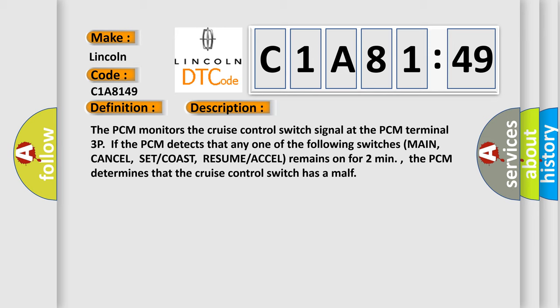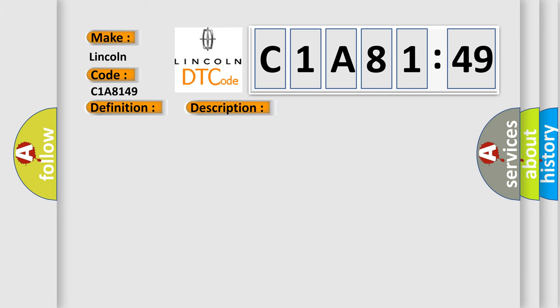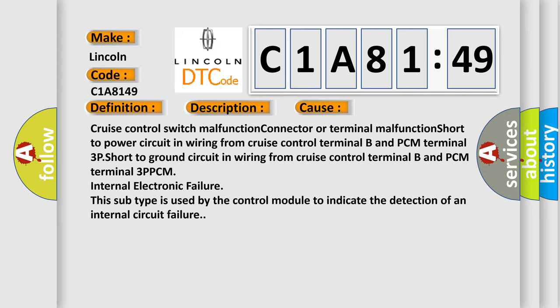This diagnostic error occurs most often in these cases: cruise control switch malfunction, connector or terminal malfunction, short to power circuit in wiring from cruise control terminal B and PCM terminal 3P, short to ground circuit in wiring from cruise control terminal B and PCM terminal 3P, or PCM internal electronic failure. This subtype is used by the control module to indicate the detection of an internal circuit failure.